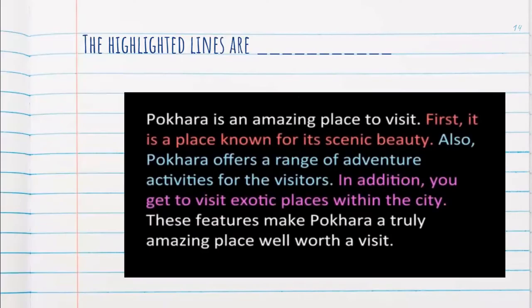Next question. Here is a paragraph about Pokhara: 'Pokhara is an amazing place to visit. First, it is a place known for its scenic beauty. Also, Pokhara offers a range of adventure activities for the visitors. In addition, you get to visit exotic places within the city. These features make Pokhara a truly amazing place well worth a visit.' What do you think the highlighted lines are? The highlighted lines are the supporting sentences or supporting details.